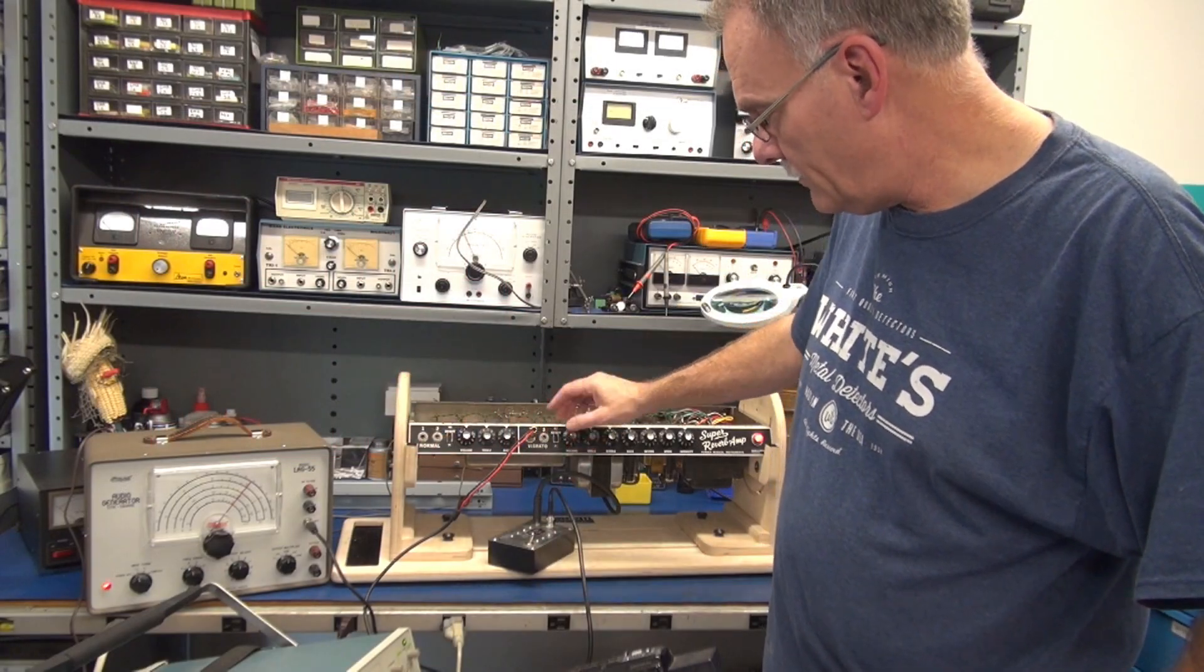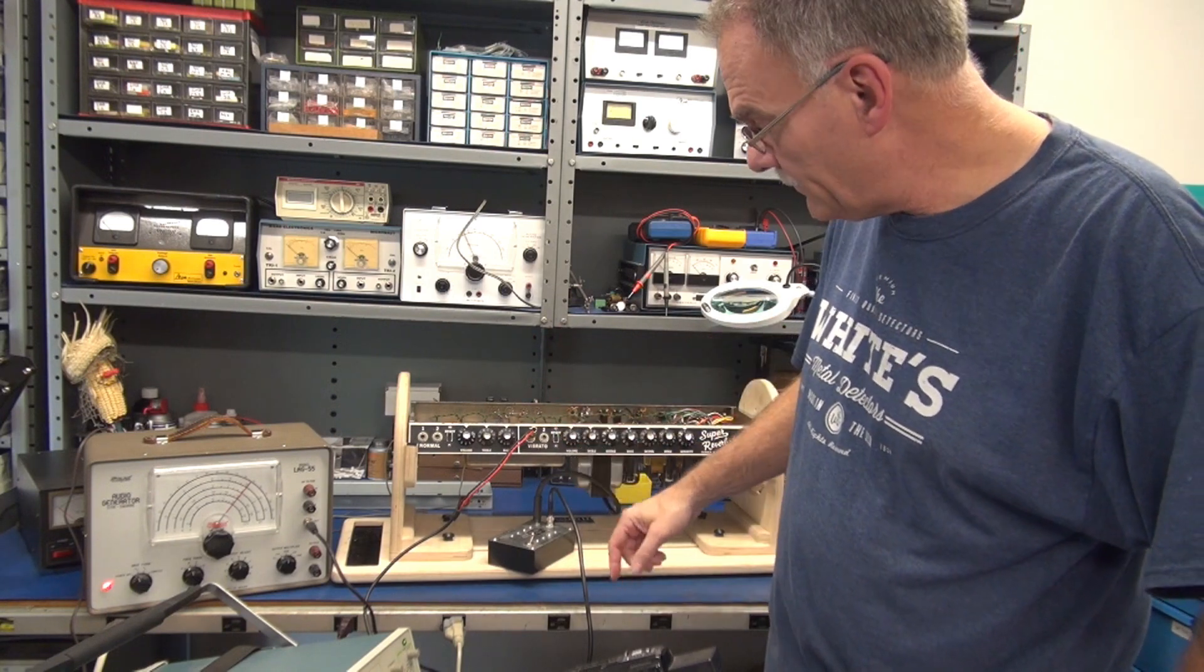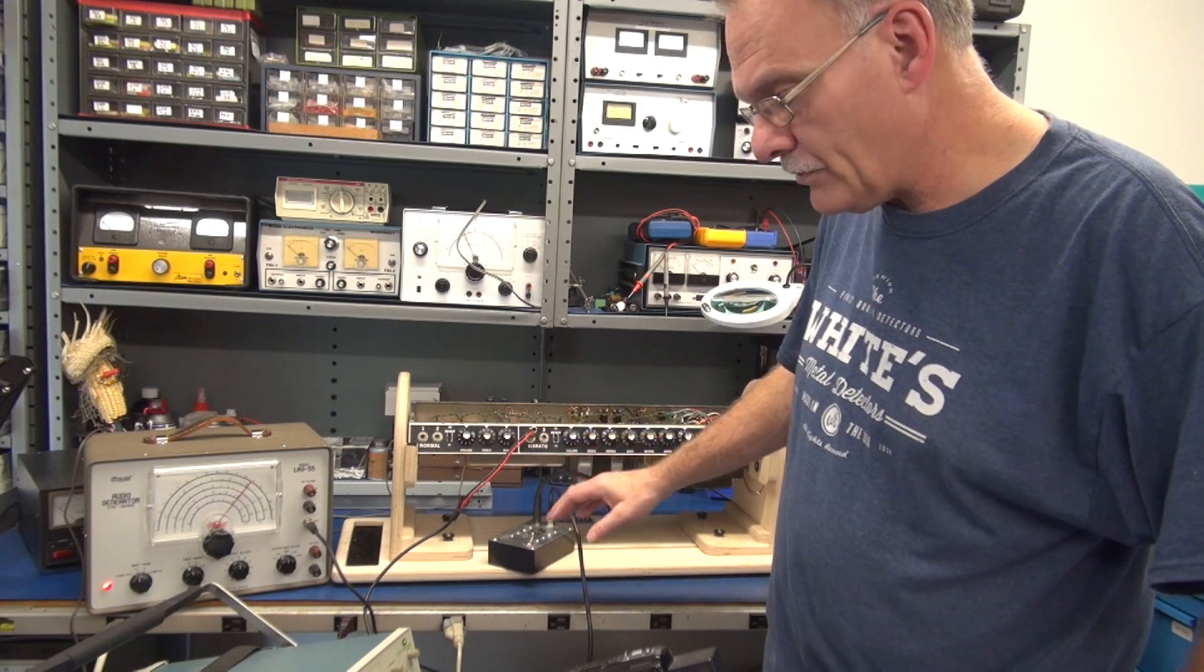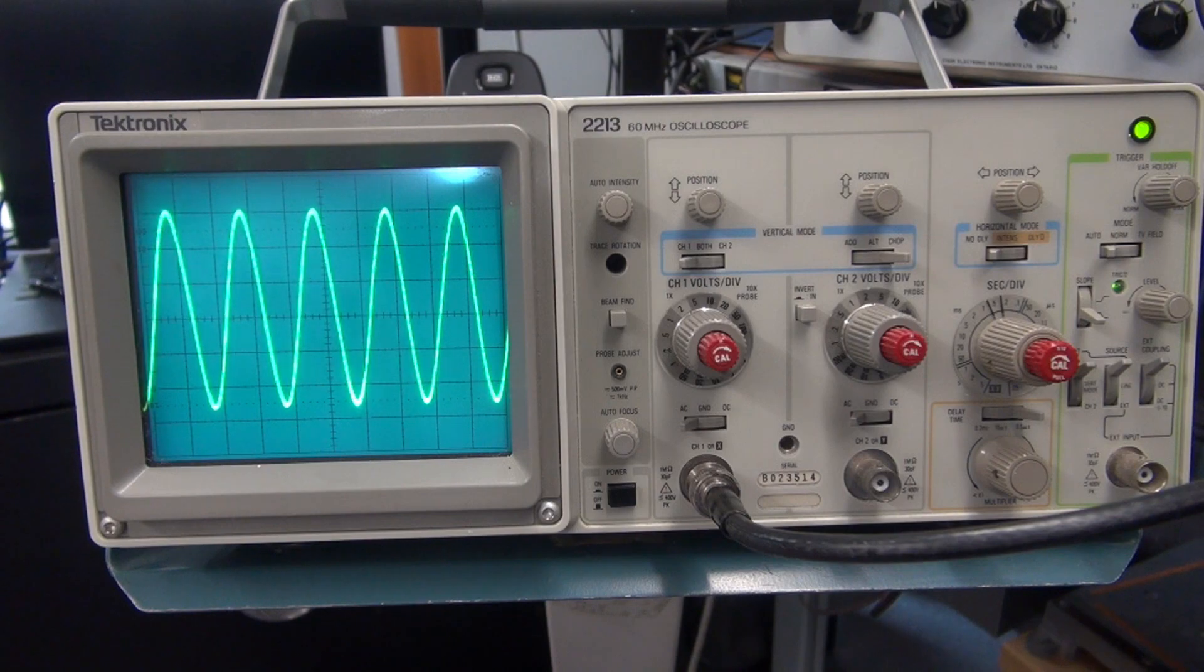So the audio generator is going to the input, amplifier is doing its thing, sending it out the speaker jack into the dummy load, and then the dummy load is being monitored by the scope. So this is the actual signal going to the speaker.